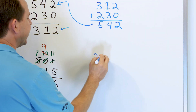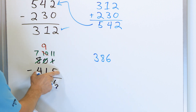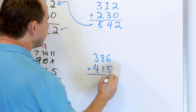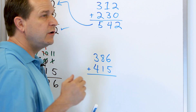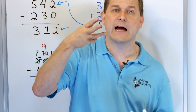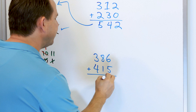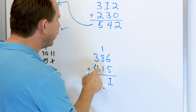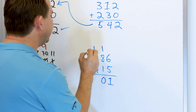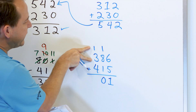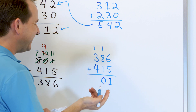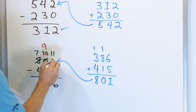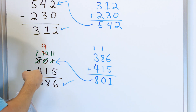Now we think this is correct, let's check it: 386, we just subtracted 415, so let's add it back in. 6 plus 5: go up 7, 8, 9, 10, 11. We land on 11 — 6 plus 5 is 11, so we carry the 1. Now 8 plus 1 is 9, plus 1 more is 10 — carry the 1. Now 3 and 1 make 4, and 4 plus 4 is 8, so we put an 8 here. 801 — that exactly matches what we have here, so we know we did our subtraction correctly.